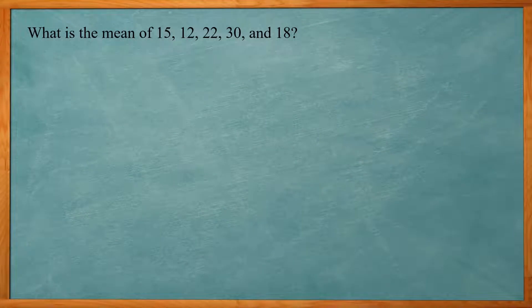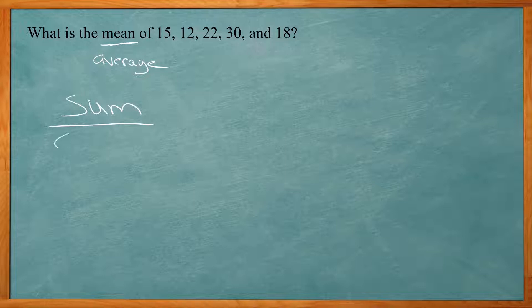Let's take a look at this first problem. This is one that might appear in the first 10 questions of the ACT math section. It says, what is the mean of 15, 12, 22, 30, and 18? We all know what the mean probably is. Average, same as average. It's the average of these numbers. How do you find the average? You have to add up all the numbers. That's the sum of the numbers and divide by how many numbers there are. That would be the count of the numbers. So sum divided by count will give you your mean. So that's pretty straightforward.